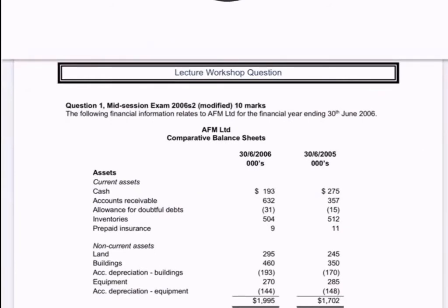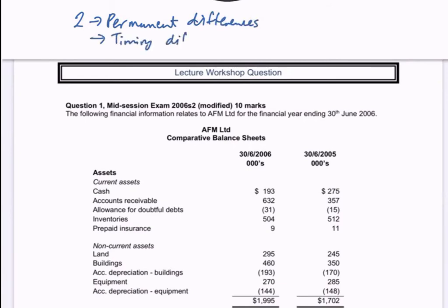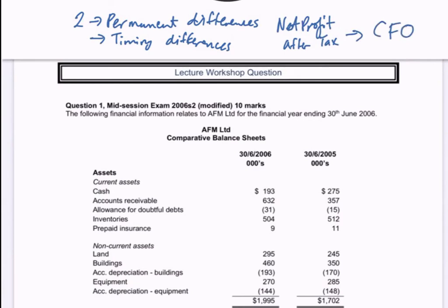In order to do this we need to adjust for two components: our permanent differences and our timing differences. Both of these help us to explain why our net profit after tax is different from cash flows in operating activities. So let's go through this question to solve for cash flows from operating activities.